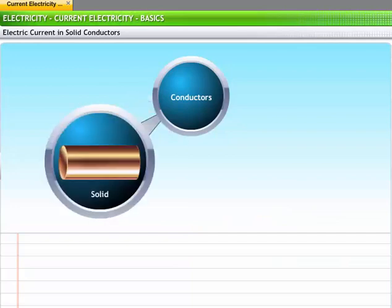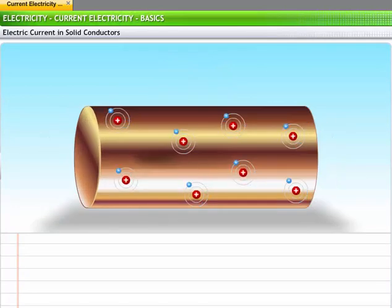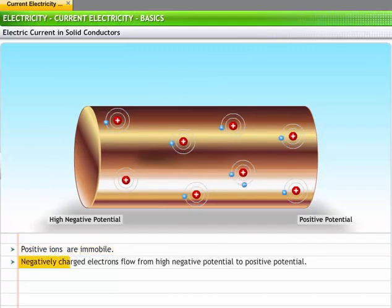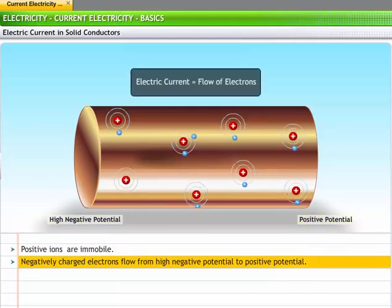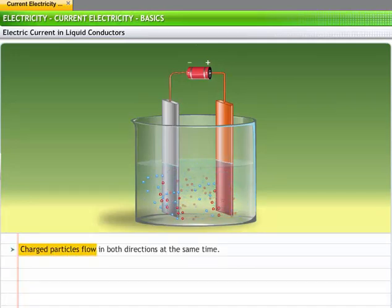Conductors can be in solid as well as liquid states. In solid conductors, positive ions are immobile and only the negatively charged electrons flow from high negative potential to positive potential. This flow of electrons is known as electric current. In liquid conductors, the current is caused by the flow of charged particles in both directions at the same time.